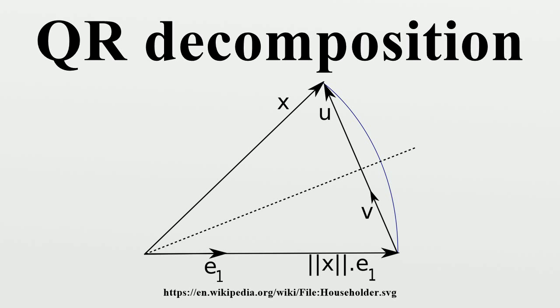We can similarly form Givens matrices which will zero the sub-diagonal elements and form a triangular matrix. The orthogonal matrix is formed from the concatenation of all the Givens matrices. Thus, we have, and the QR decomposition is.